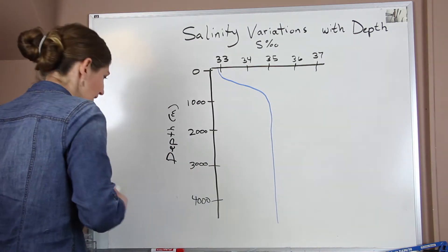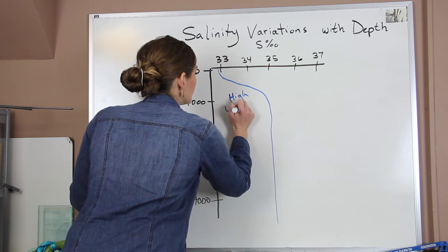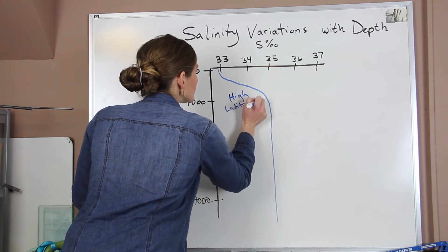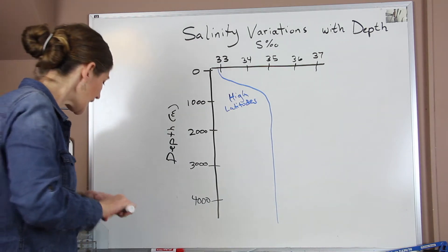And in our high latitudes, these are our high latitudes. So high latitudes are up by the poles, 90 degrees north and south latitude would be high latitudes.